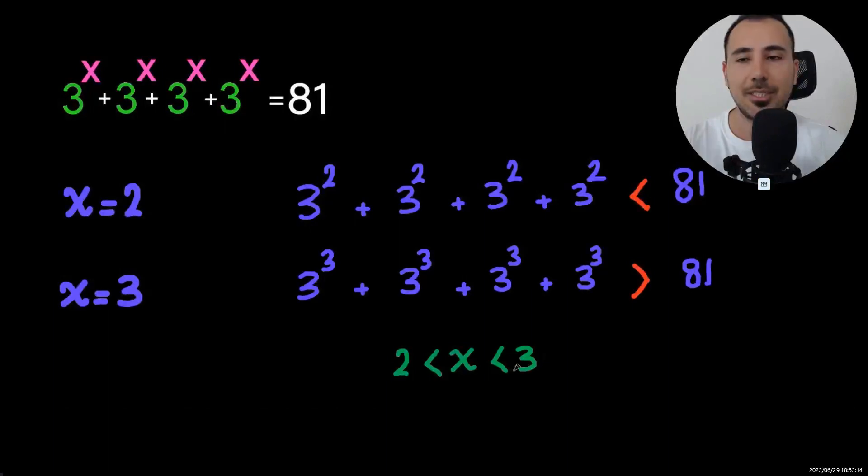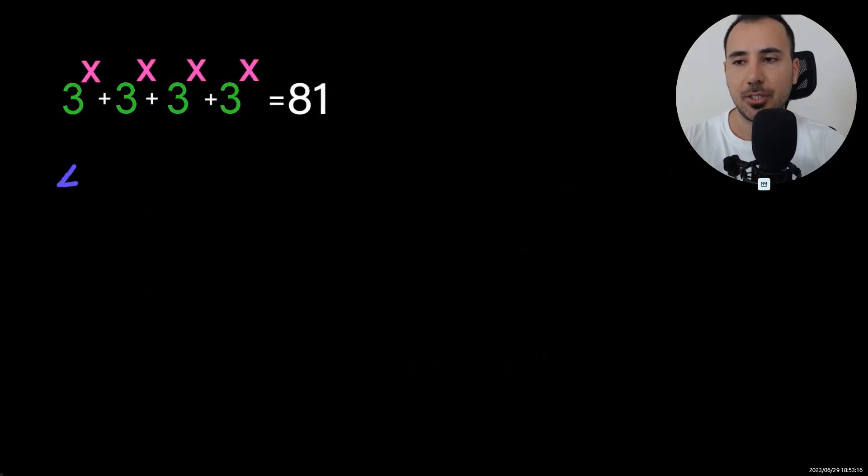Now, let's actually solve the equation. As you see, we have 4 of these terms. So we're going to write it as 4 times 3 to the power of x equals 81.